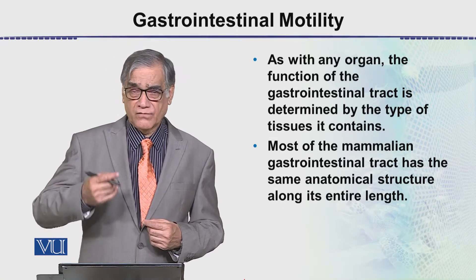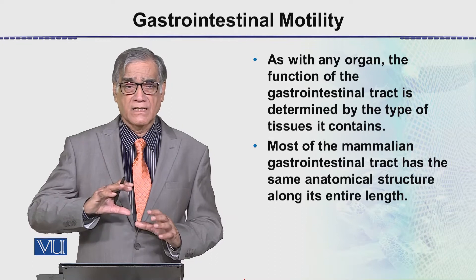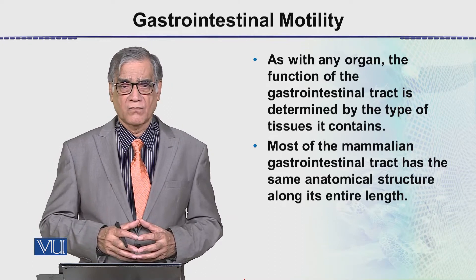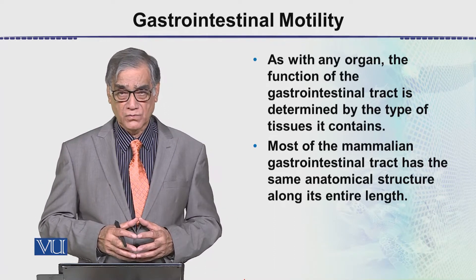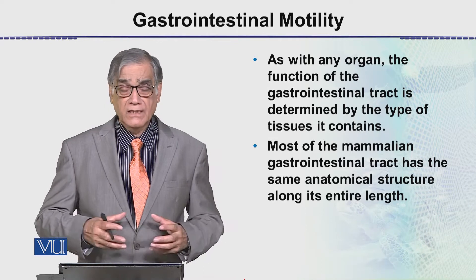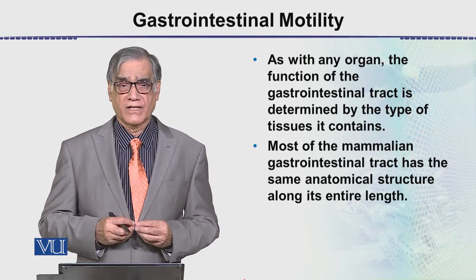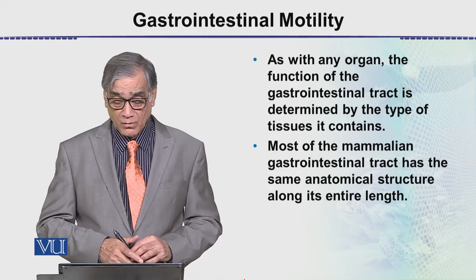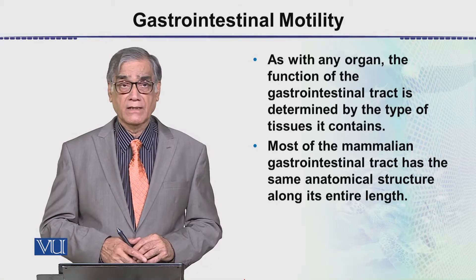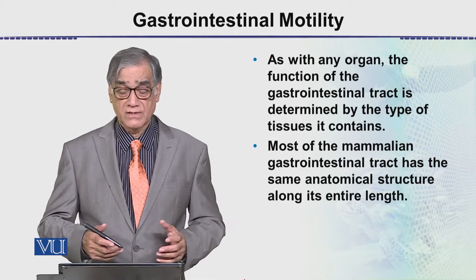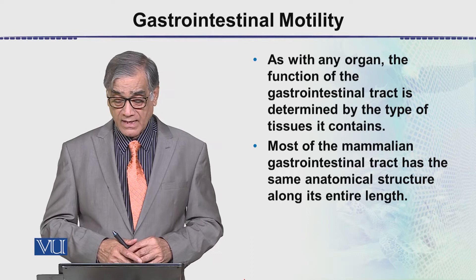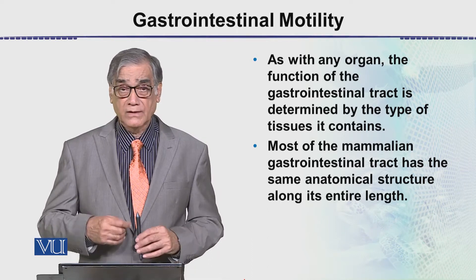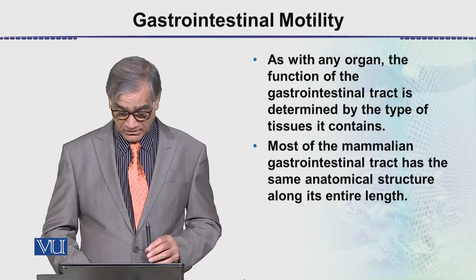Right from the mouth to the anus, it involves intestinal tissues, and from these movements, food moves along the intestine. Most mammalian gastrointestinal tracts have the same anatomical structure along the entire length of the GI tract.